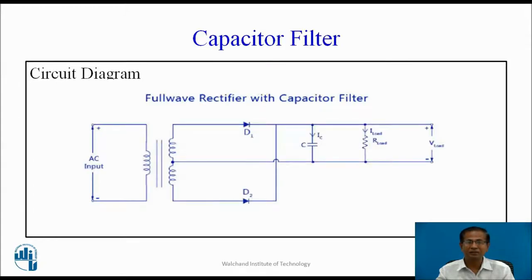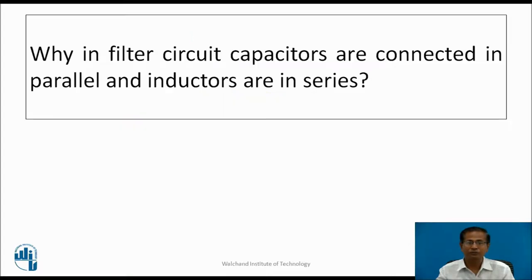Capacitor filter: this is the circuit diagram of the capacitor filter. Here, the main filtering component is the capacitor, connected between the rectifier and load. In filter circuits, capacitors are connected in parallel and inductors are connected in series.